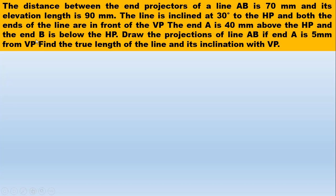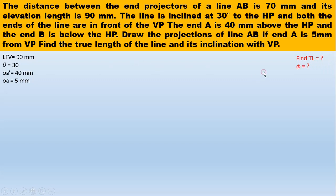Both ends being in front of VP means they are either in the first quadrant or the fourth quadrant. End A is 40mm above HP and end B is below HP, so the position of A is in the first quadrant and position of B is in the fourth quadrant. Draw the projection of the line if end A is 5mm from VP. Find the true length of the line and its inclination with VP.